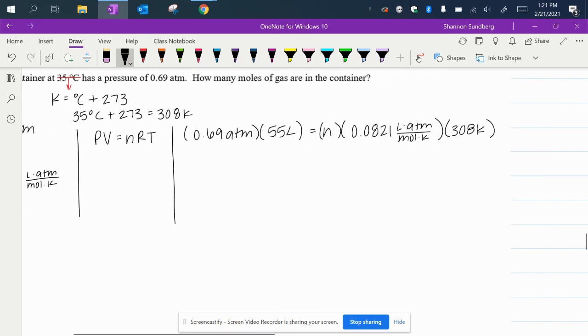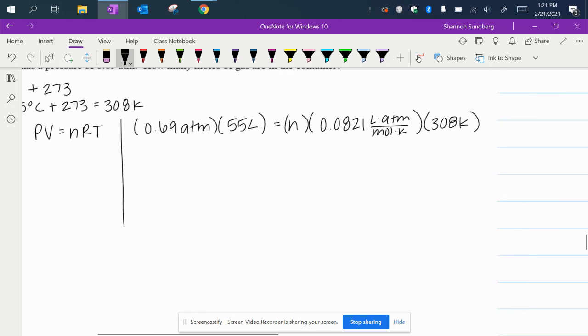I always like to clean up the numbers as much as I can. So I'm not plugging too many into my calculator at the same time. It's just less of a chance of a mistake. So I'm going to multiply 0.69 times 55 and that comes to 37.95 and I want to pull my units down. So atm times liters equals my n value.